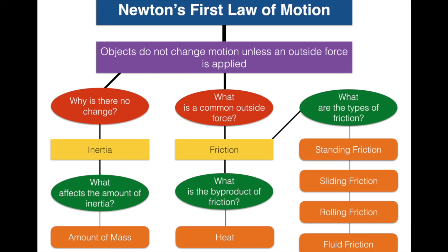Newton's first law of motion says objects in motion stay in motion, and objects at rest stay at rest unless acted upon by an outside force. Why is there no change? It's because of a property of matter called inertia, which is directly related to mass — the more mass, the more inertia, which means it's harder to change its motion. The most common outside force is friction — when two objects rub against each other — and the main byproduct is heat. There are four types of friction: static, sliding, rolling, and fluid friction. That's your lesson on Newton's first law of motion — hope you enjoyed it!